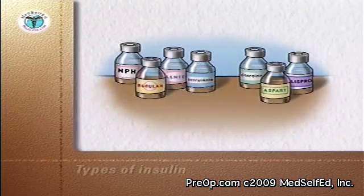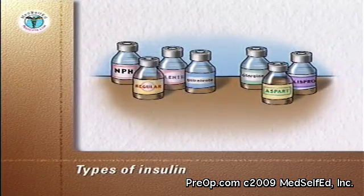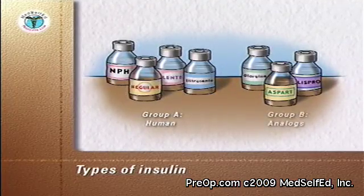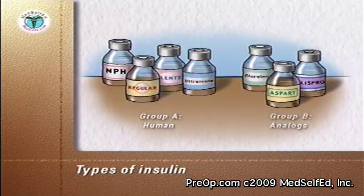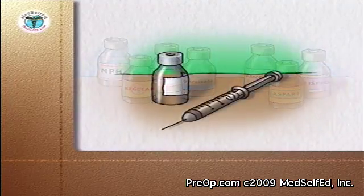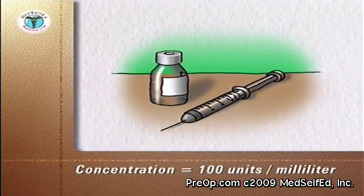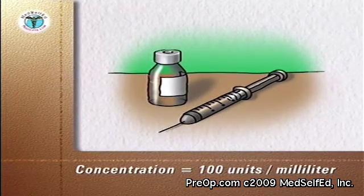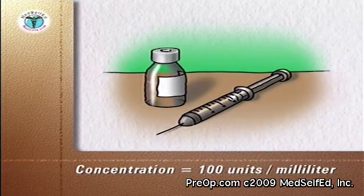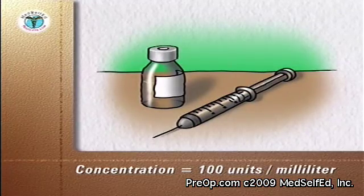There are two main groups of insulins used in the treatment of diabetes: human insulins and analog insulins, made by recombinant DNA technology. The concentration of most insulins available in the United States is 100 units per milliliter. A milliliter is equal to a cubic centimeter. All insulin syringes are graduated to match this insulin concentration.